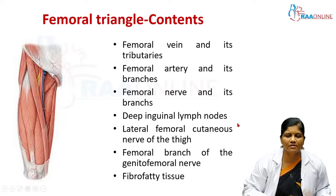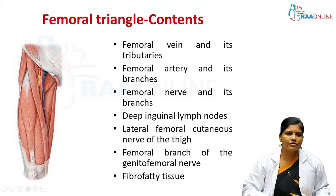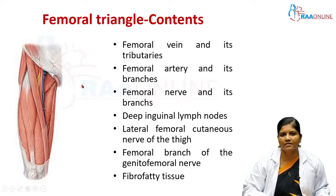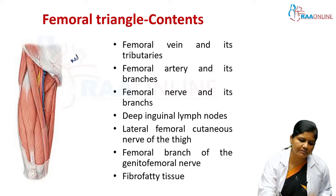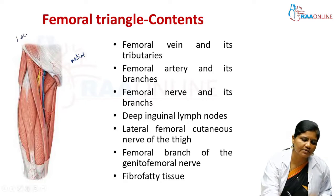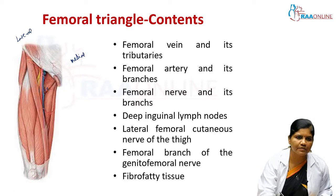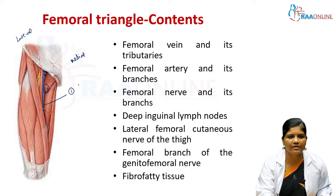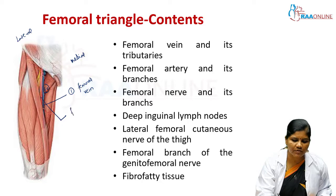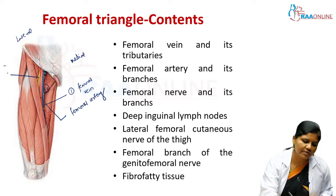The contents of the femoral triangle, from medial to lateral, are: femoral vein and its tributaries, femoral artery and its branches, and most laterally the femoral nerve and its branches. Other contents include the femoral group of lymph nodes (deep inguinal lymph nodes), the lateral femoral cutaneous nerve of thigh most laterally, and the femoral branch of the genitofemoral nerve just above the femoral artery.